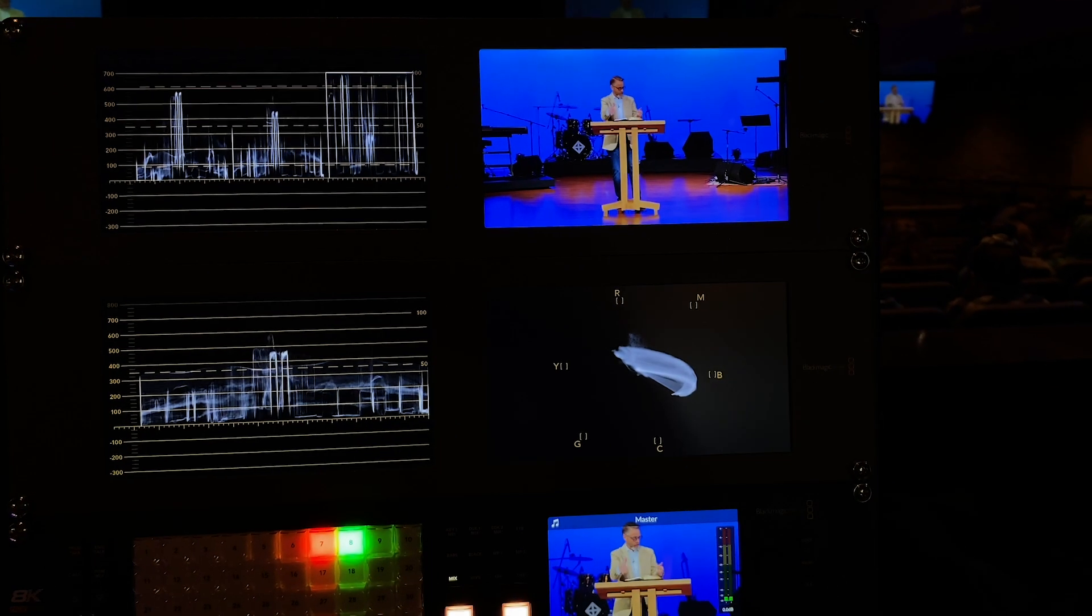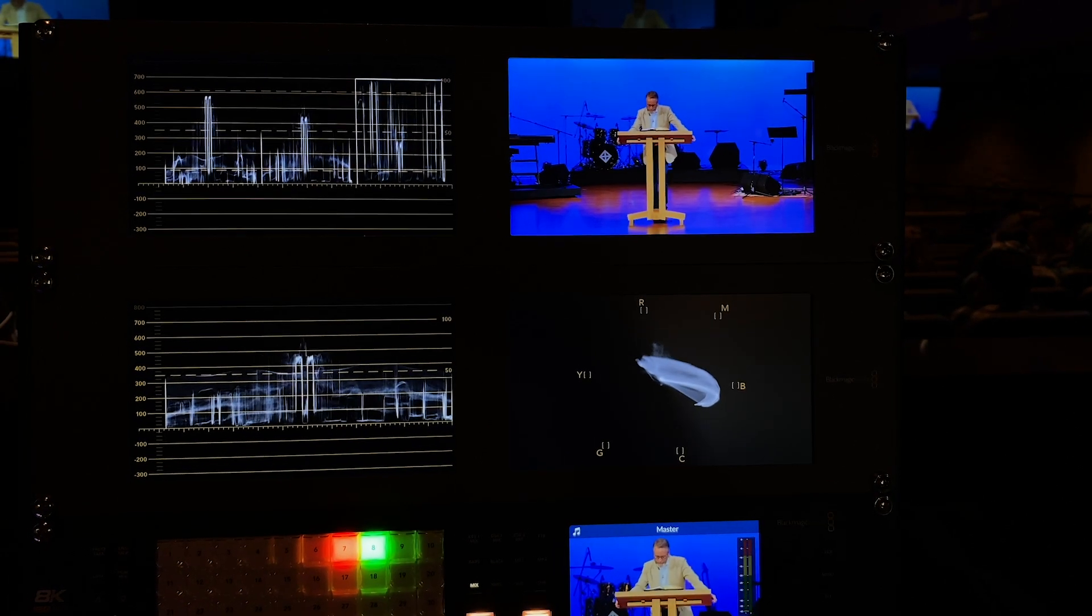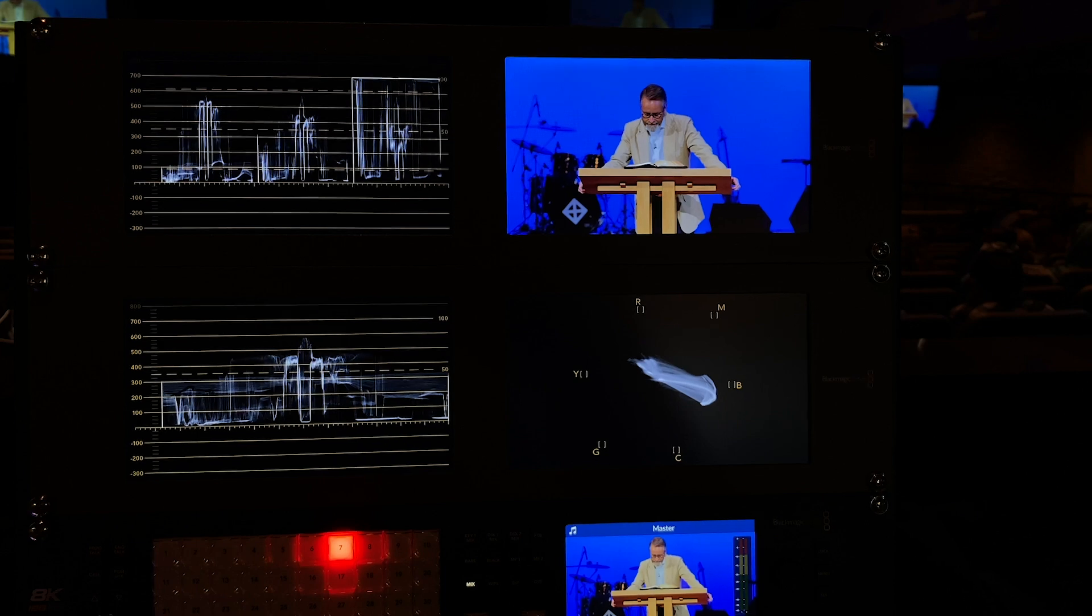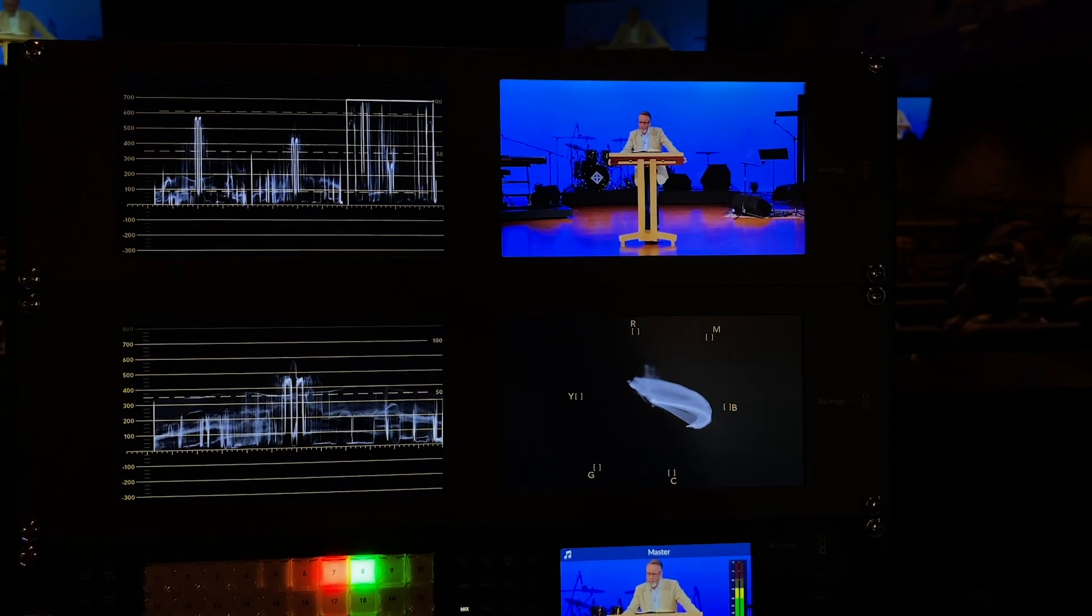In live production, a video engineer typically has a router or aux panel that allows them to quickly route different signals to a scope. As they punch from source to source, it becomes easy to see how signals differ in terms of brightness and color, and then make informed adjustments about how to make the cameras match as closely as possible.